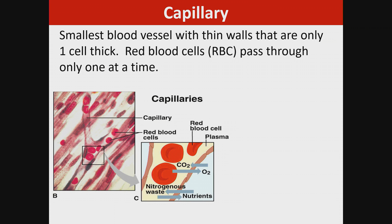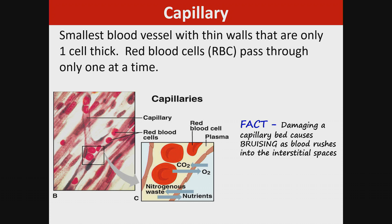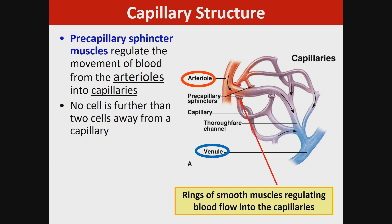The capillary is the smallest blood vessel, with thin walls that are only one cell thick. Red blood cells pass through only one at a time — that's how narrow capillaries are. Damaging a capillary bed causes bruising as blood rushes into the interstitial spaces. Precapillary sphincter muscles regulate the movement of blood from the arterioles into the capillaries. No cell is further than two cells away from a capillary.